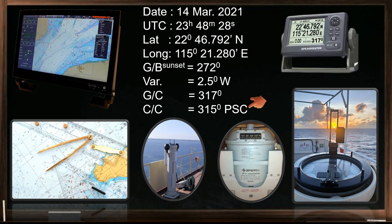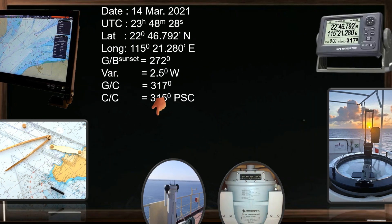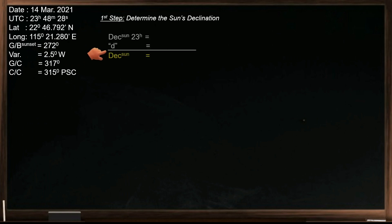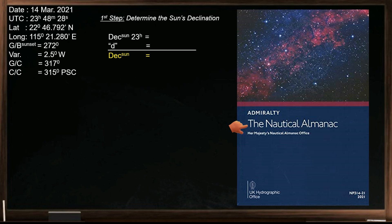PSC means per-standard compass, which refers to the heading or bearing measured by the ship's magnetic compass. Our first step is to determine the sun's declination at the time of observation. We need a nautical almanac to determine the sun's declination. The year of observation was 2021, so we will use the nautical almanac published in the same year.